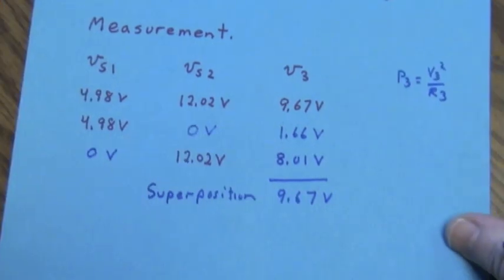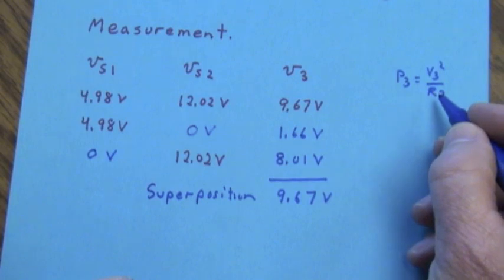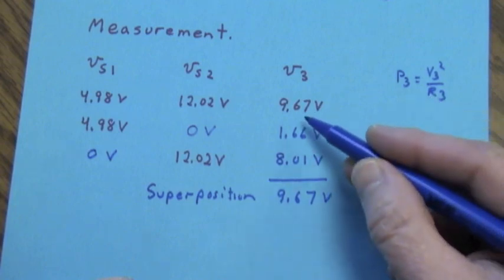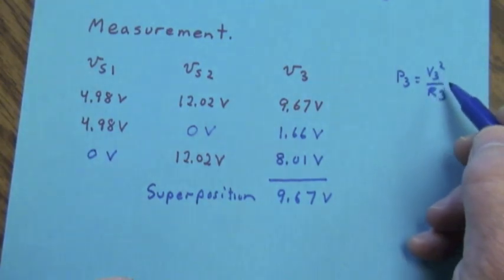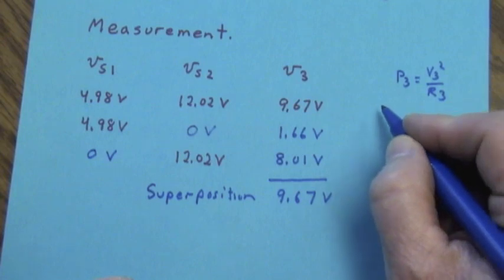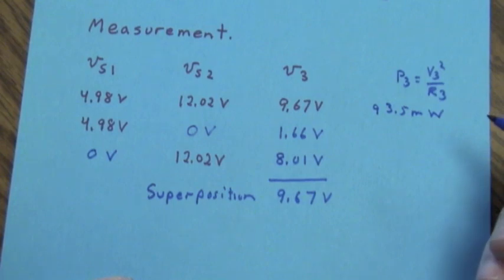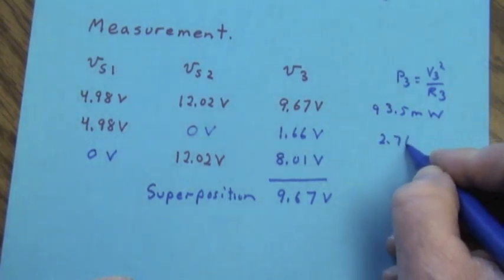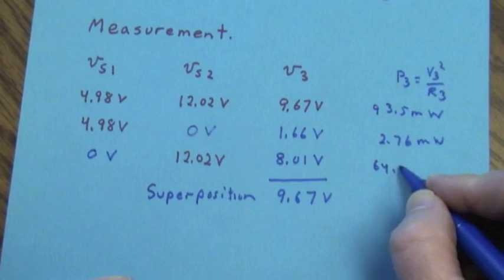But let's explore one other aspect of superposition in linear circuits. Suppose we look at the power delivered to R3. When both of these voltage sources are acting together, we had 9.67 volts across R3. If we look at 9.67 volts squared divided by 1 kilo-ohm, we get a value of 93.5 milliwatts. What about the case when just Vs1 was acting? Then we got 1.66 volts. That corresponds to 2.76 milliwatts. And likewise, when we had 8.01 volts, that's 64.2 milliwatts.